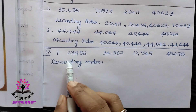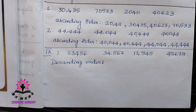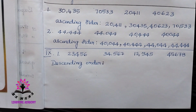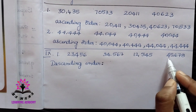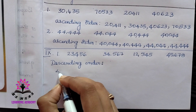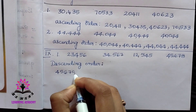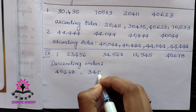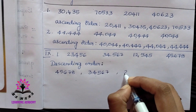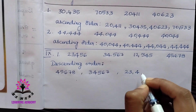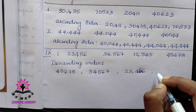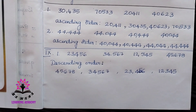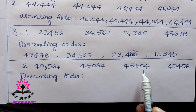Next: write the given numbers in descending order. To write in descending order, start with the bigger number first, then go to the smaller number. Looking at these four numbers: 45,678 is the biggest, then 34,567, then 23,454, then 12,345.